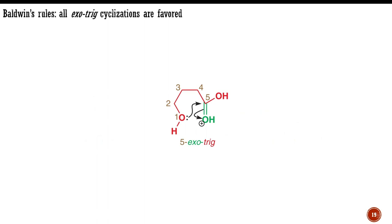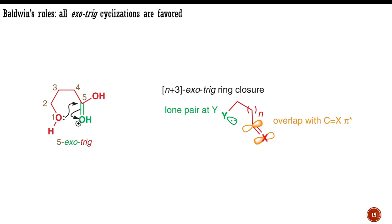Similarly, all exo-trigonal cyclizations are favored. These include intramolecular esterification and related reactions. For exo-trigonal reactions it is easy for the nucleophilic lone pair to overlap with the antibonding pi orbital of carbon-heteroatom double bond. Again, you can find many examples in your lecture notes.